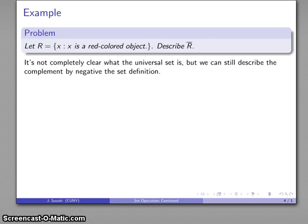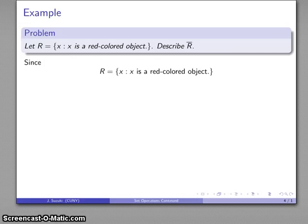Well, since we don't have the universal set given to us, it's not entirely clear what the universal set is, we can still describe the complement of the set by negating the set definition. In this case, R is the set of things that include all red-colored objects.